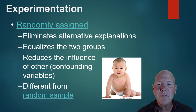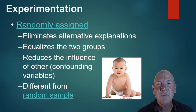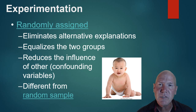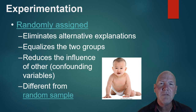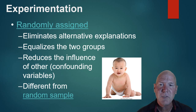This is different from random sampling. Random sampling — used in surveys — means taking a sample from the population. Random assignment means taking that sample and randomly putting people into groups. So random assignment is specifically about dividing people into groups.